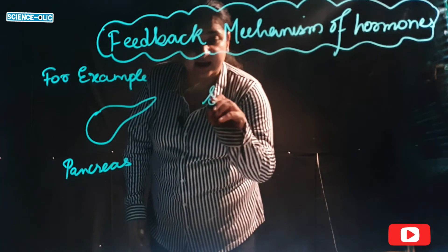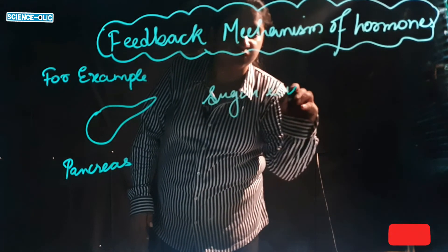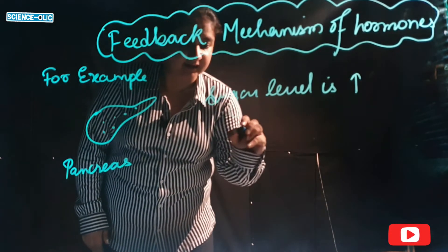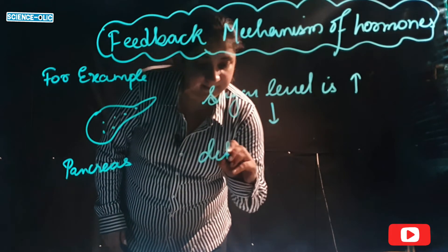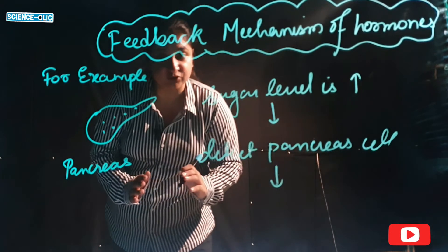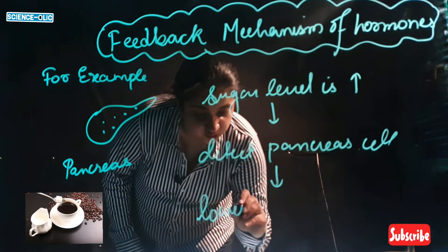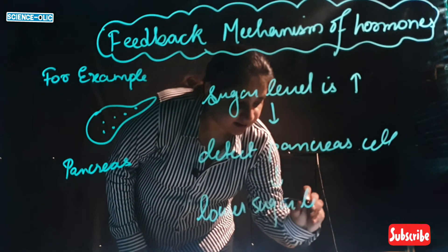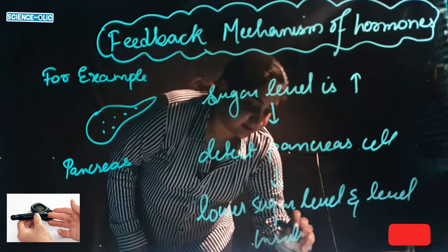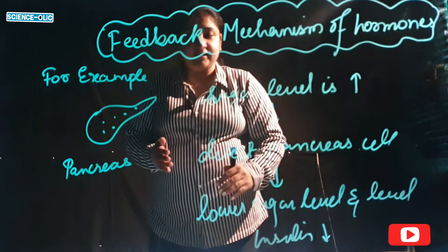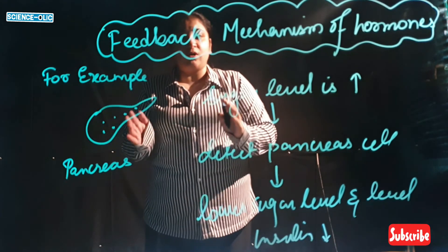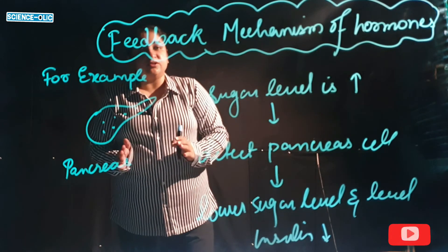When the sugar level is high in a diabetic patient, the pancreas cells detect it. The pancreas then works to lower the sugar level, and the insulin level also decreases. When insulin decreases to normal, the pancreas resumes its normal function and produces a normal amount of insulin. This is the negative feedback mechanism.